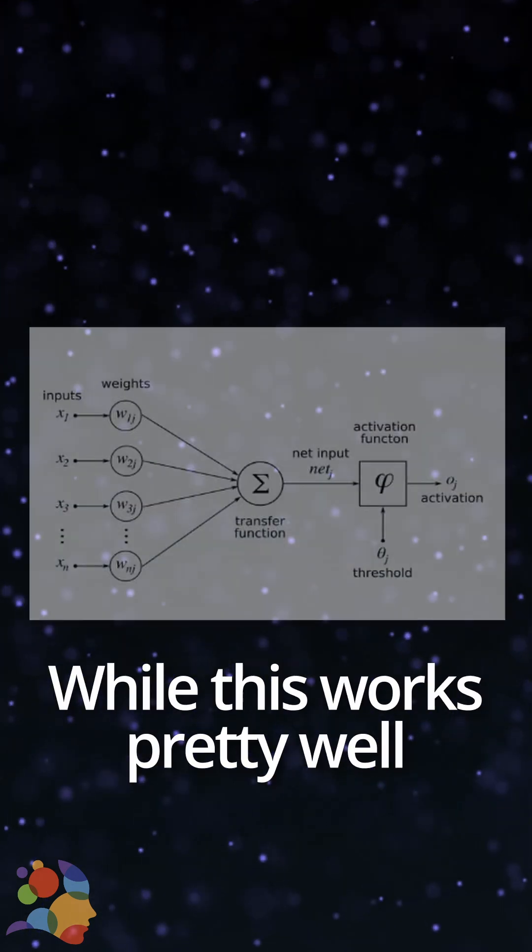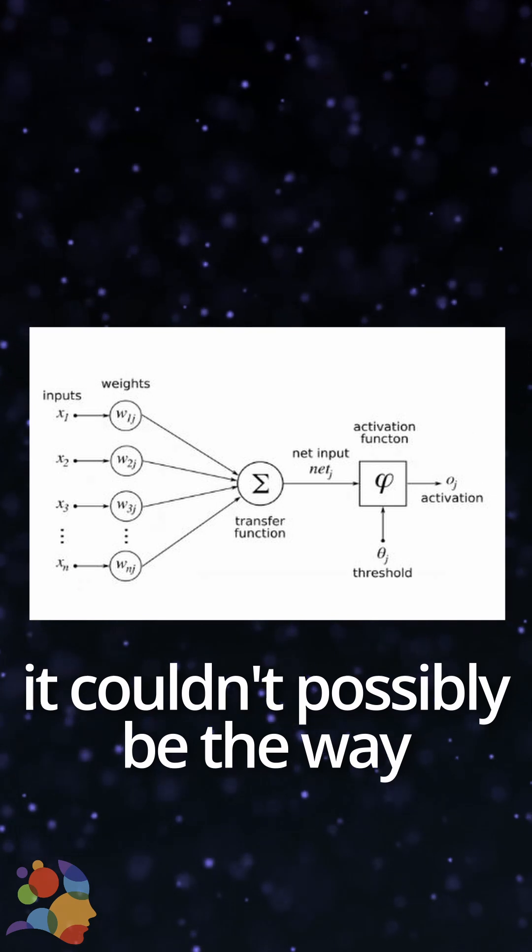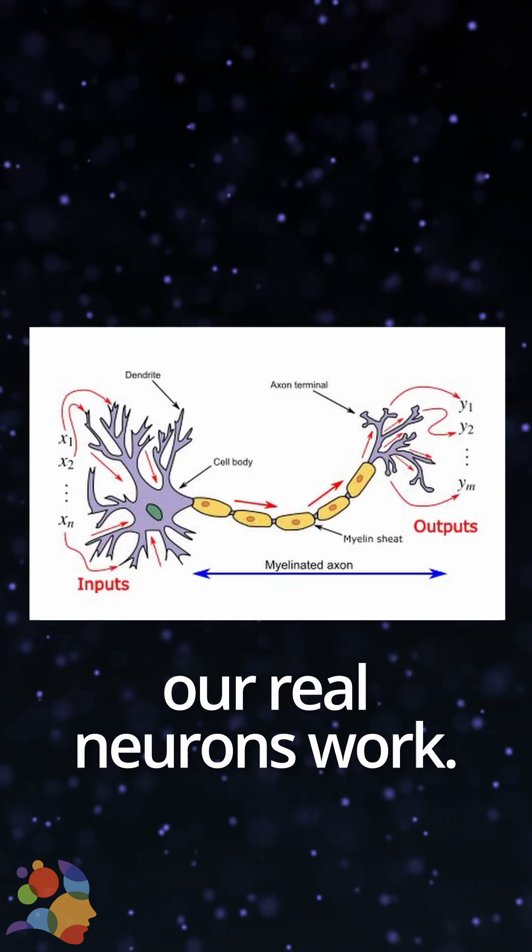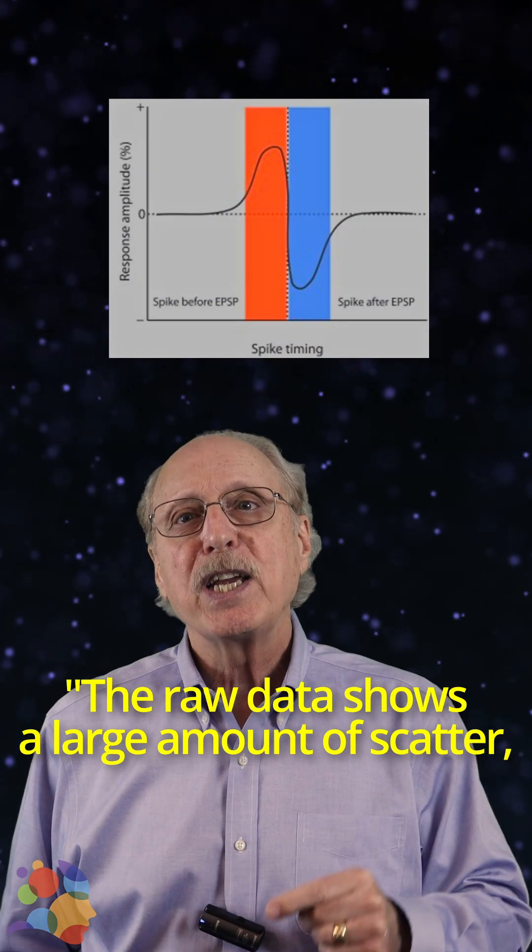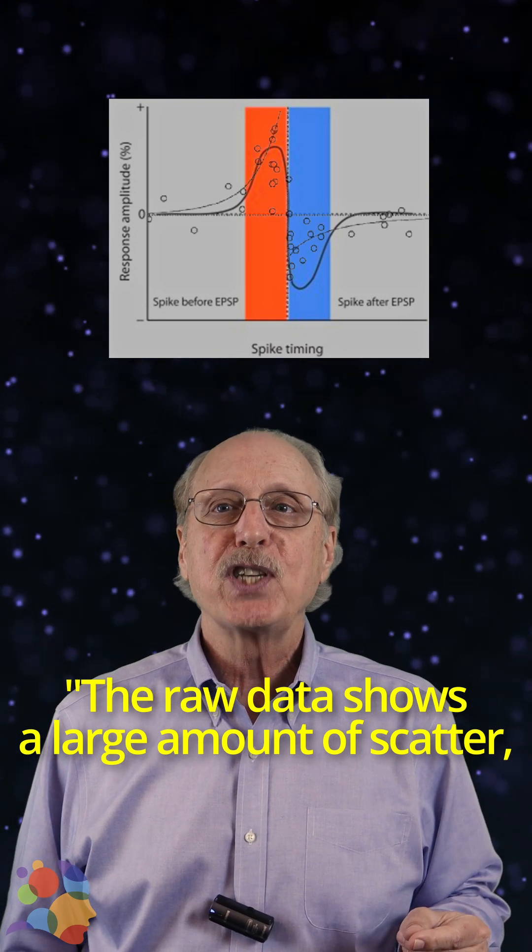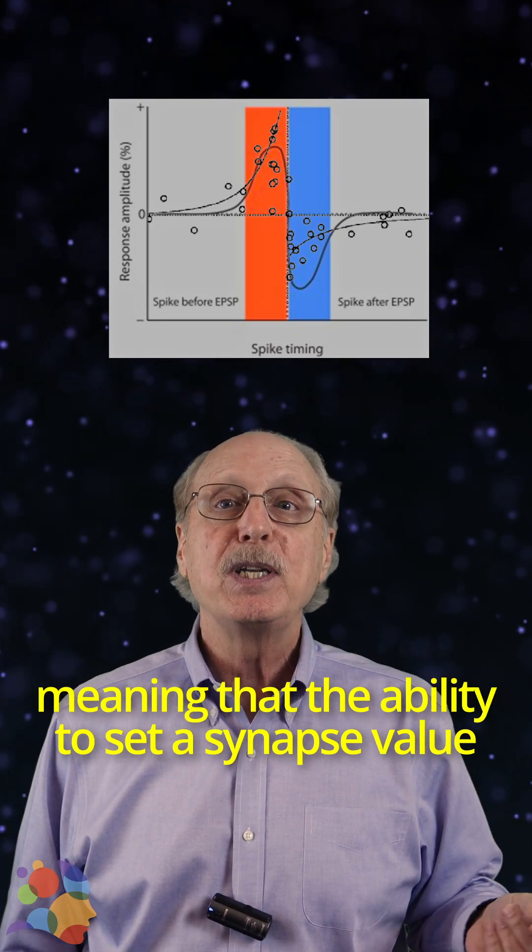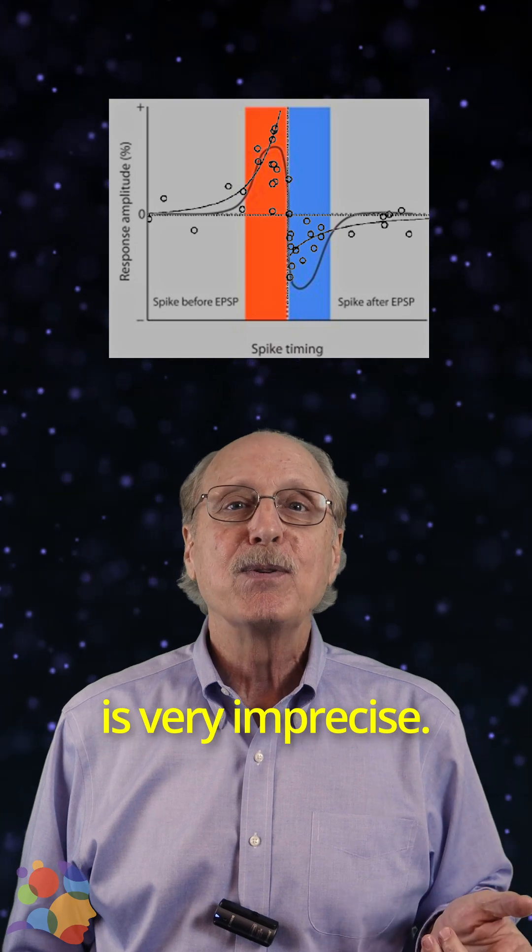While this works pretty well for perceptrons, it couldn't possibly be the way our real neurons work. The raw data shows a large amount of scatter, meaning that the ability to set a synapse value is very imprecise.